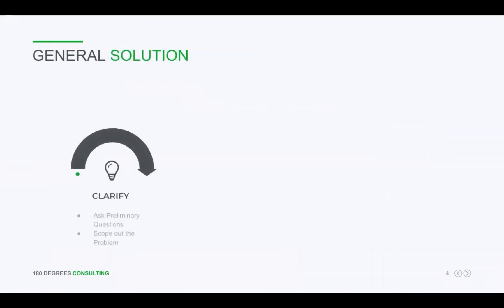Now I'll be explaining the general solution of a normal guesstimate. The first step is to clarify — that is, asking preliminary questions and scoping out the problem. For example, if I needed to find out the number of phones in Delhi, I could ask preliminary questions like: are we considering phones that are on display in stores?